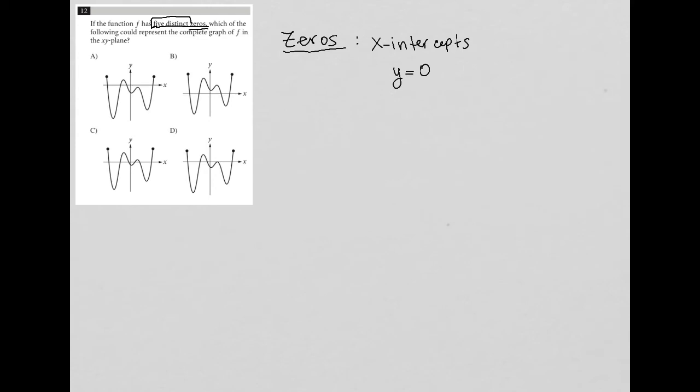Instead of saying five distinct zeros, we're looking for five distinct x-intercepts. So we can just count. So choice A, there's one, there's two, there's three, and there's four. So not five, so A is out.